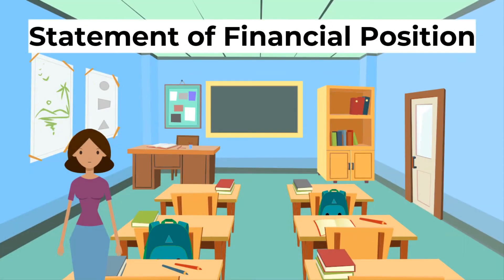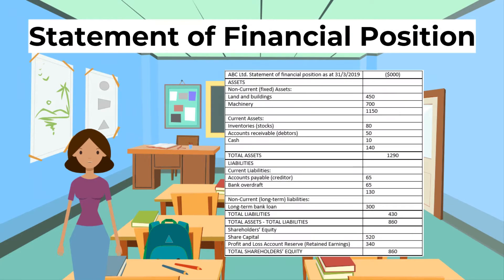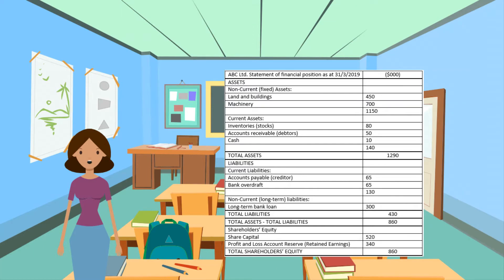Today we are going to be looking at the statement of financial position. The balance sheet, along with the income statement, is prepared at the end of the financial year. It shows the value of a business's assets and liabilities at a particular time. It is also known as the statement of financial position.